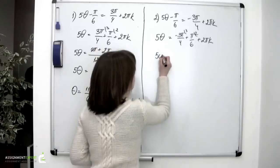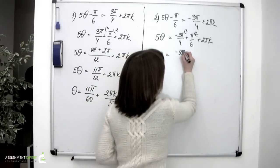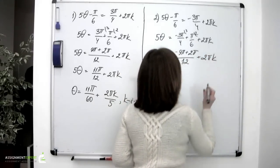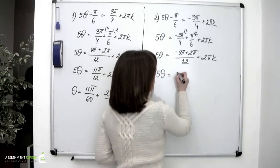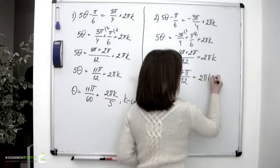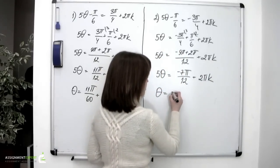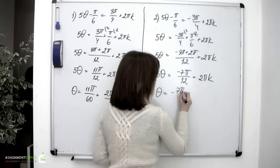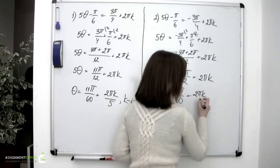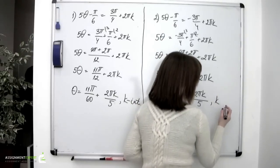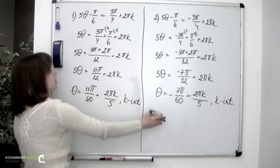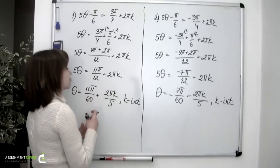Finally, we arrive at two solutions. The first is 5 theta equals 11 pi over 12 plus 2 pi k, giving theta equals 11 pi over 60 plus 2 pi k over 5. The second is 5 theta equals negative 7 pi over 12 plus 2 pi k, giving theta equals negative 7 pi over 60 plus 2 pi k over 5, where k is an integer. These two expressions are the solutions to our equation.